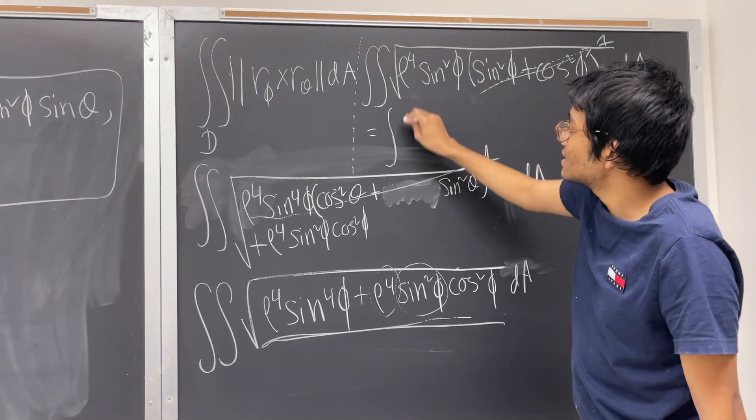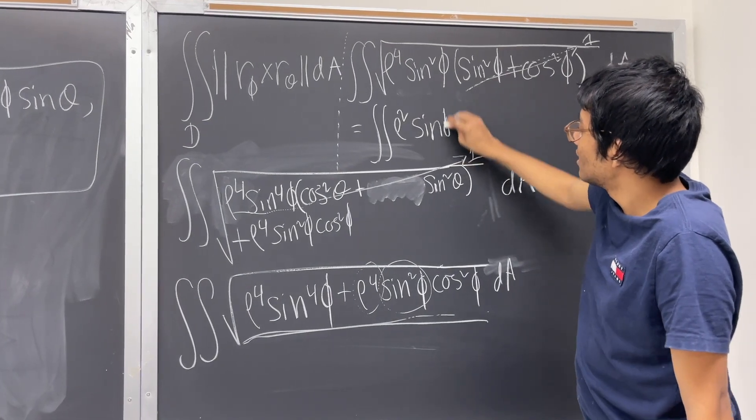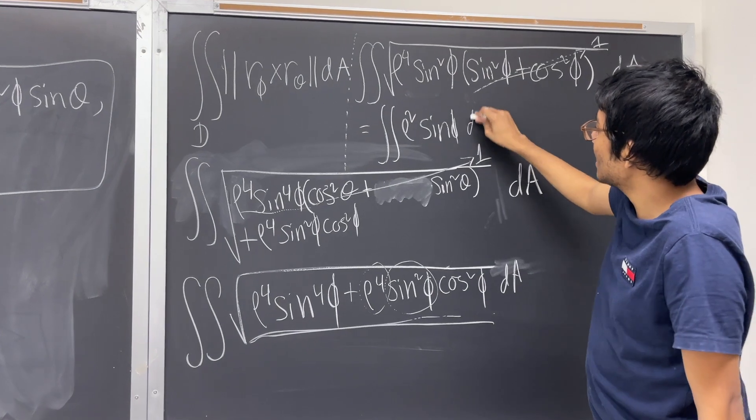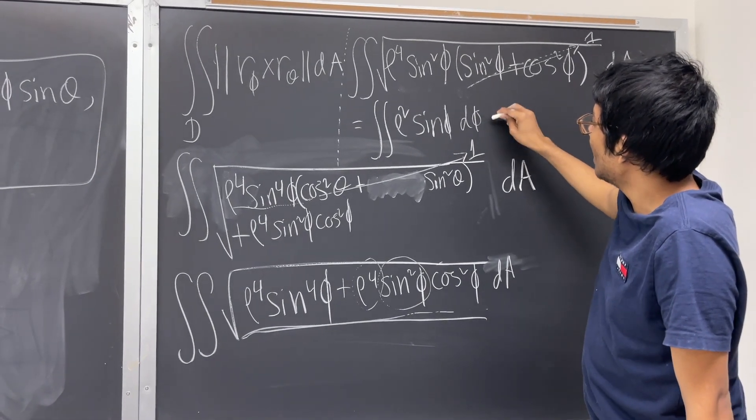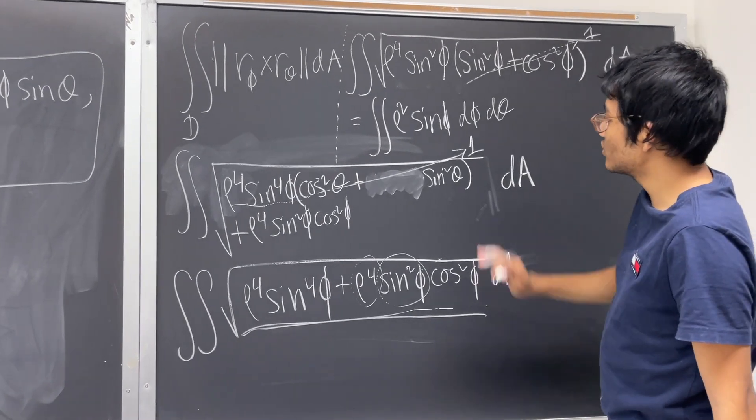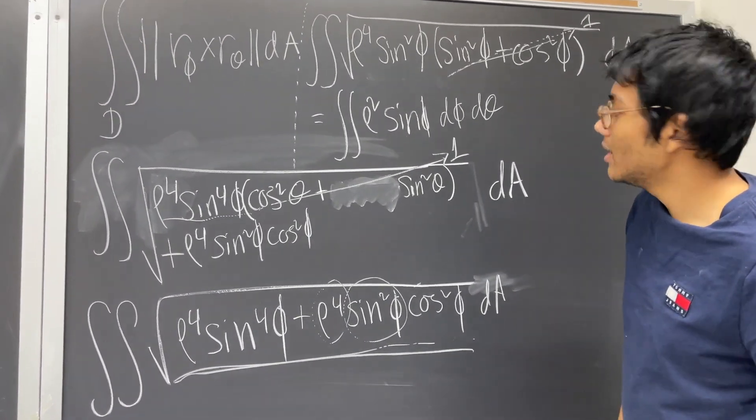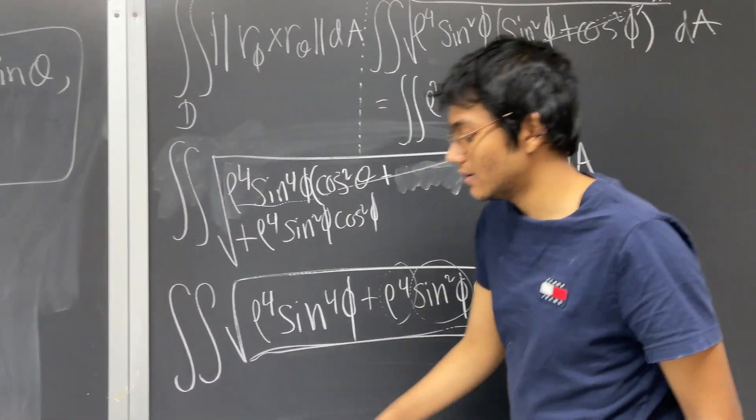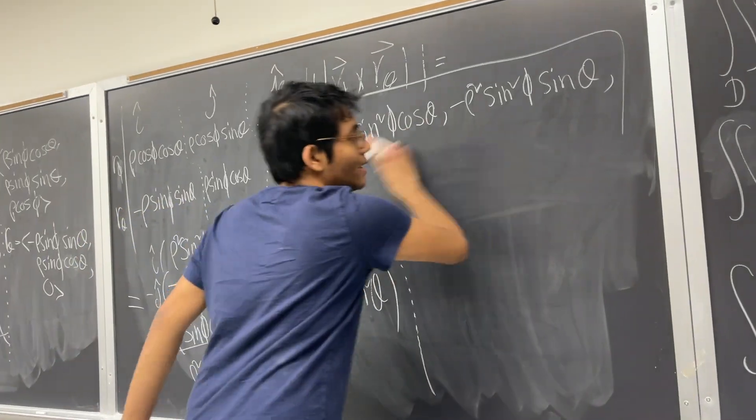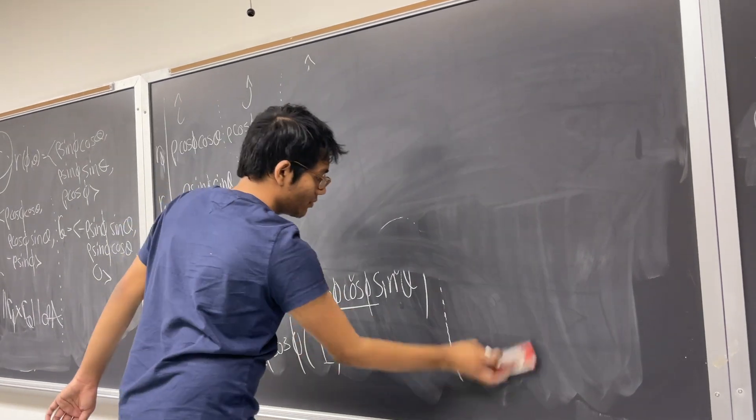And what is that? That's nothing more than rho squared sine phi. That's it. And dA, what is dA going to be? It's going to be d phi d theta. Now, we can just solve this as normal. So first of all, maybe I should head over here and I should write down what our integral is so we can finish this problem once and for all.